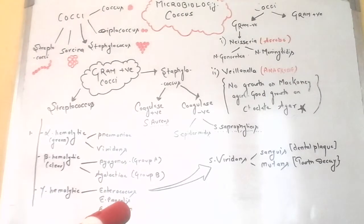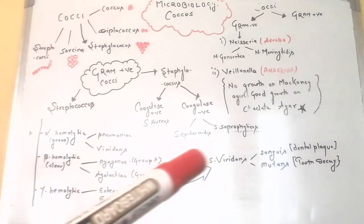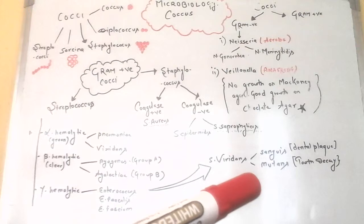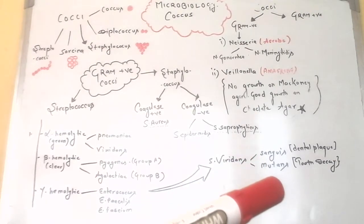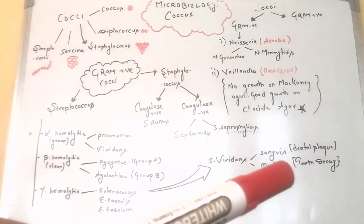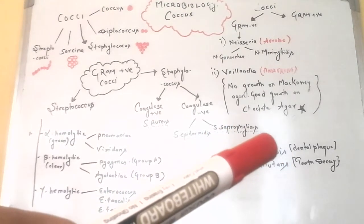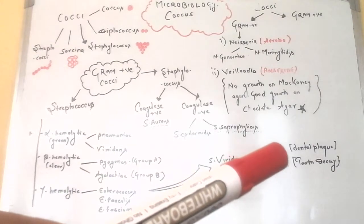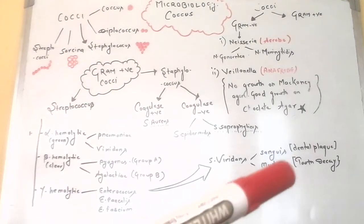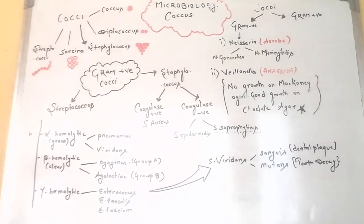Alpha hemolytic streptococci are further divided into S. asperidins, S. sanguinis, and S. mutans. Sanguinis is associated with diseases related to the oral cavity. All diseases related to the oral cavity and teeth problems are due to these viridans streptococci — specifically, dental plaque is caused by S. sanguinis and tooth decay is due to S. mutans.